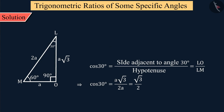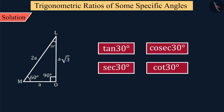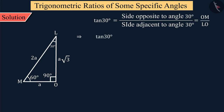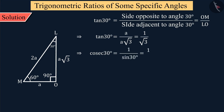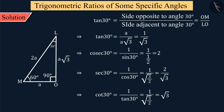Similarly, we obtain the values of trigonometric ratios tan, cosec, sec, and cot 30 degrees. In this way, we have obtained all trigonometric ratios of 30 degree angles.